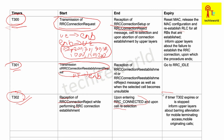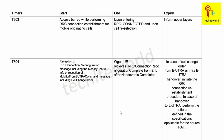Upon expiry of T302, the UE informs the upper layer about the particular condition — specifically about mobile terminating access and mobile originating calls.